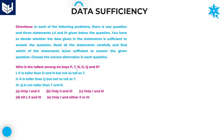Who is the tallest among 6 boys: P, T, N, D, Q, R? Statement 1 says P is taller than D and N, but not as tall as T. According to this statement alone, we cannot say who is the tallest among the 6 persons. By using only statement 1, you will not get the answer.